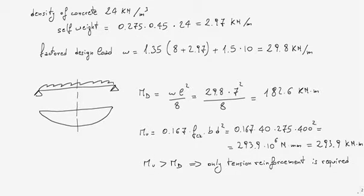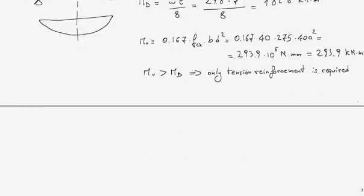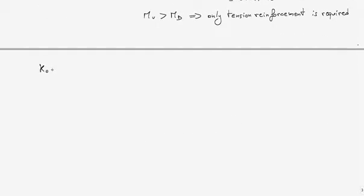Now I can determine the value of K₀, which is given by the design moment divided by fck·b·d². That is 182.6×10⁶ Nmm.